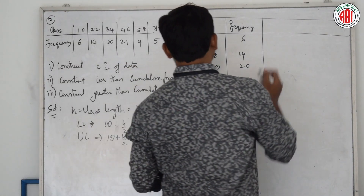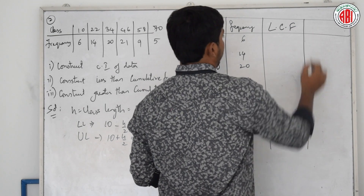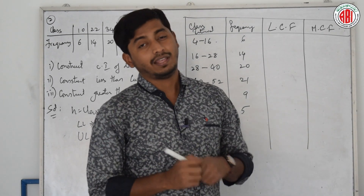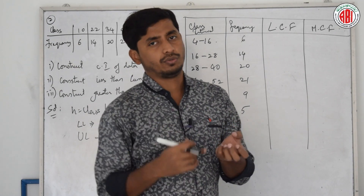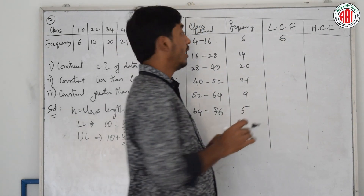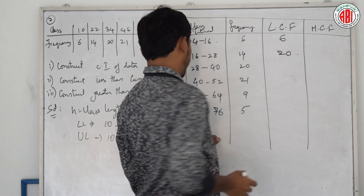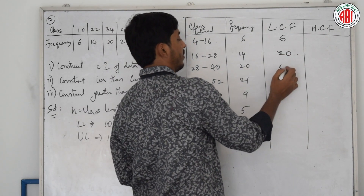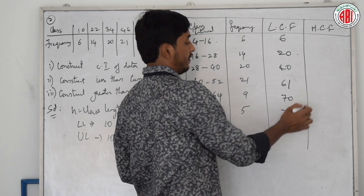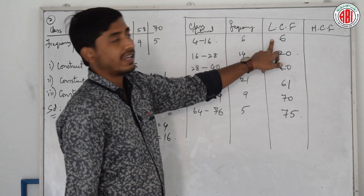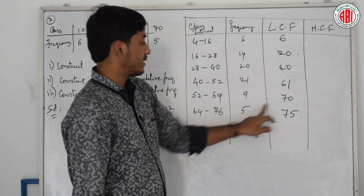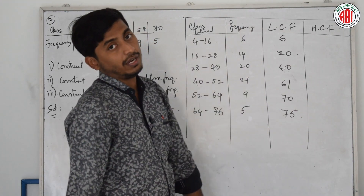Next is less than cumulative frequency. Cumulative means adding all subsequent numbers one after the other. For example, write 6 as it is. Then add 14 to get 20. Then add 20 to get 40. Then add 21 to get 61. Add 9 to get 70. Add 5 to get 75. That is the less than cumulative frequency — just keep adding the frequencies.